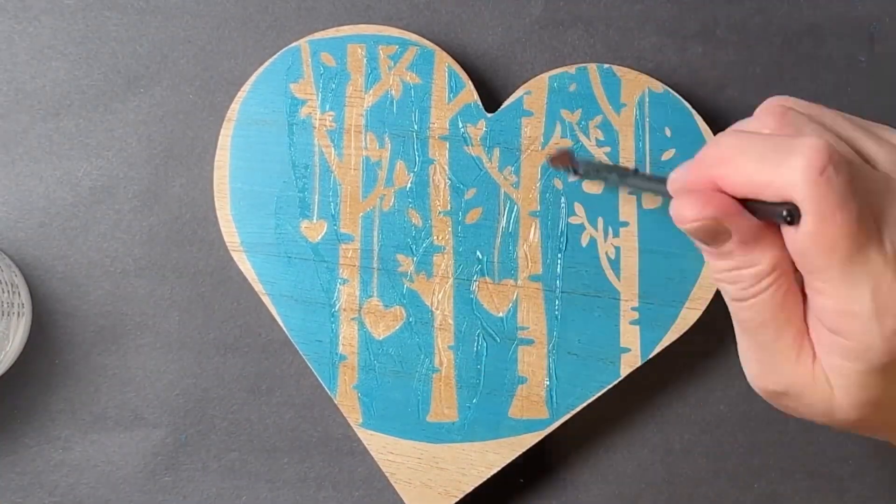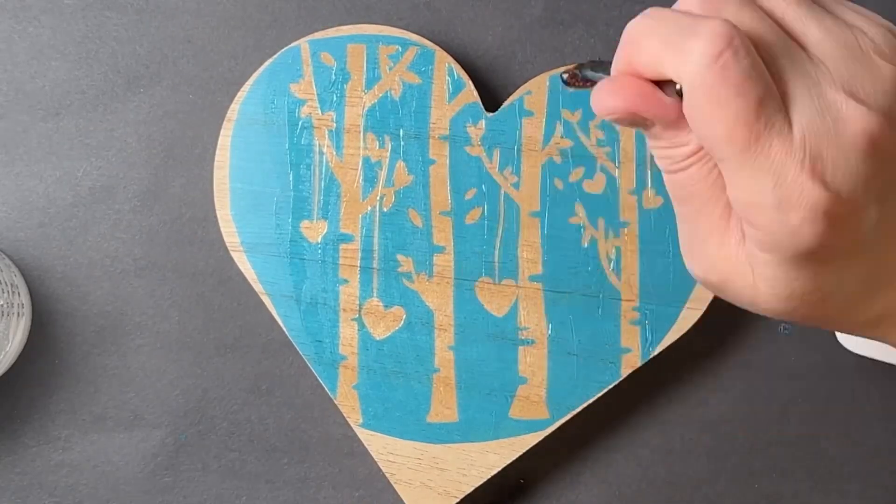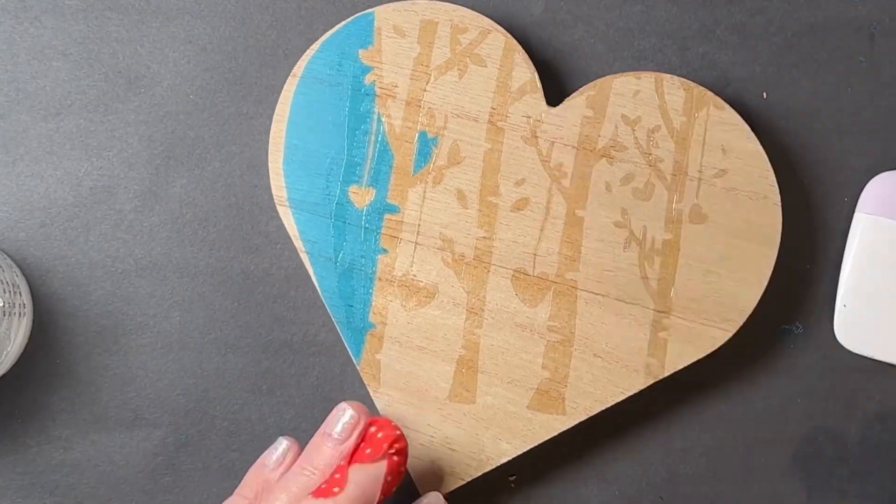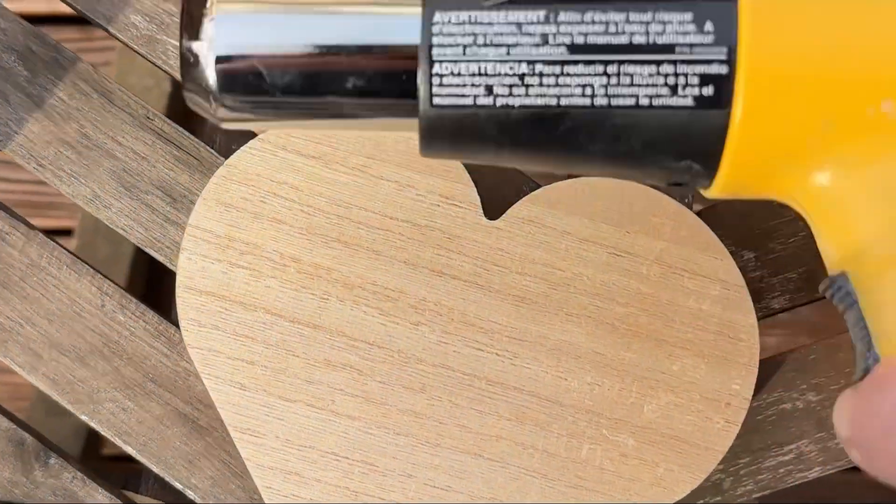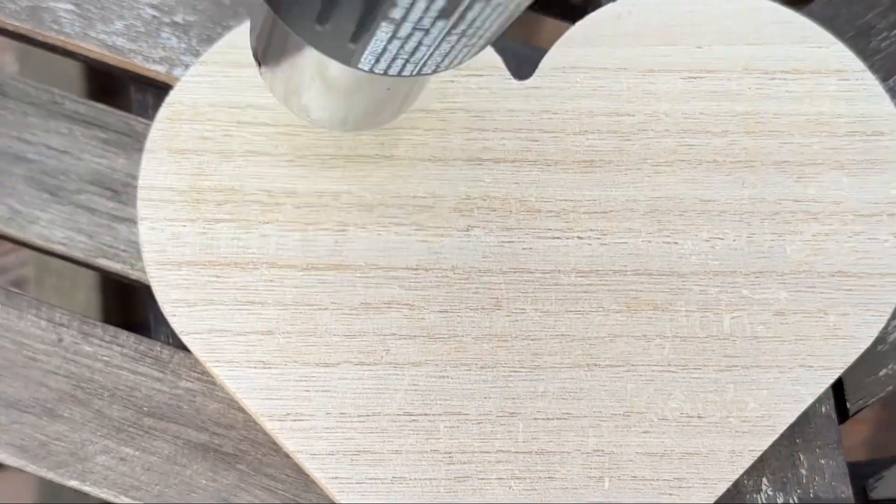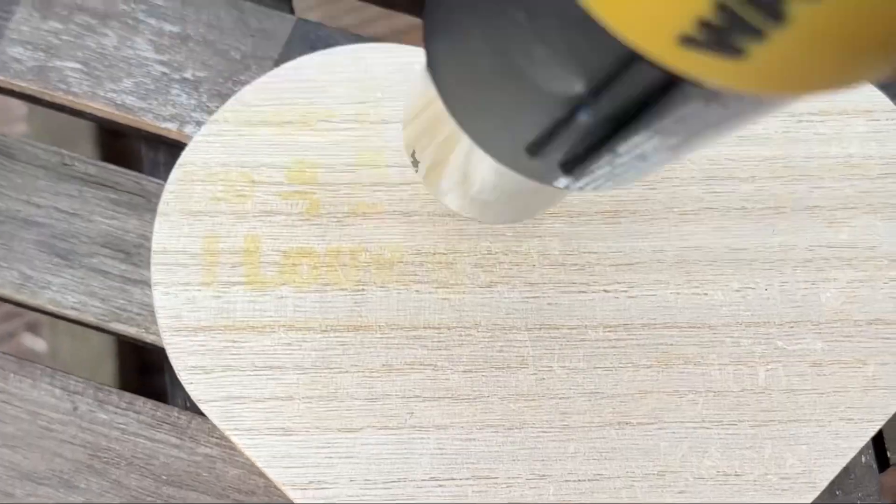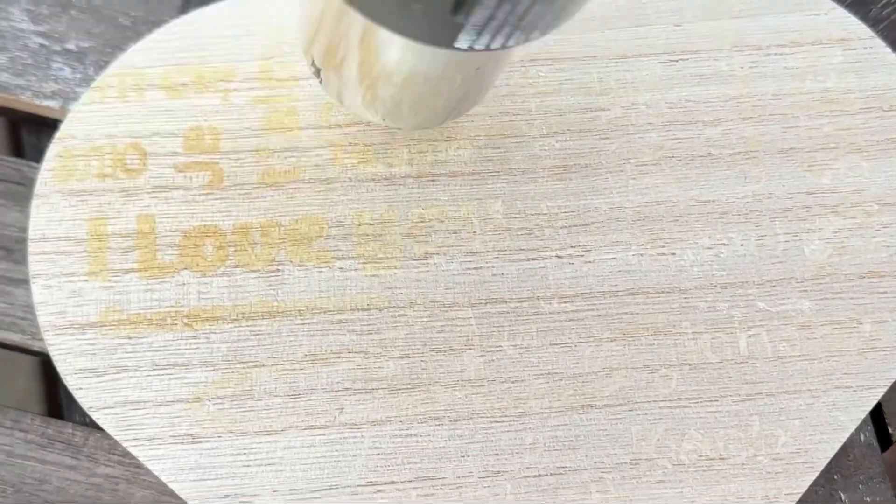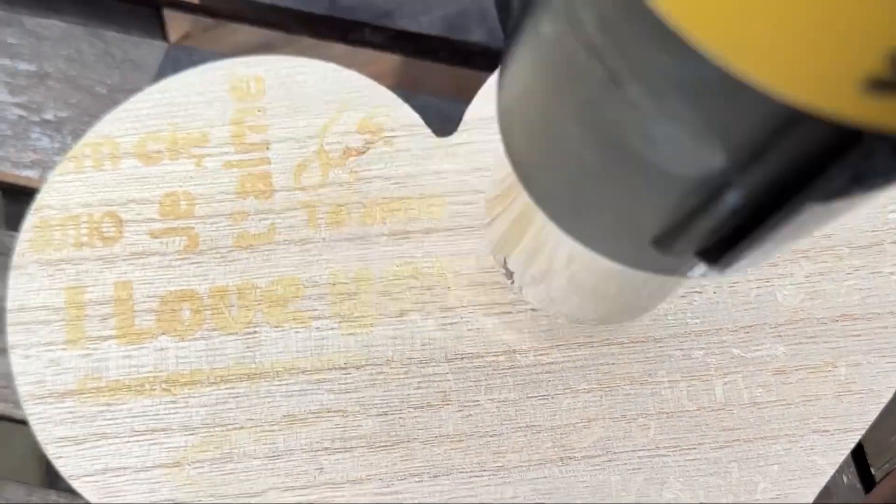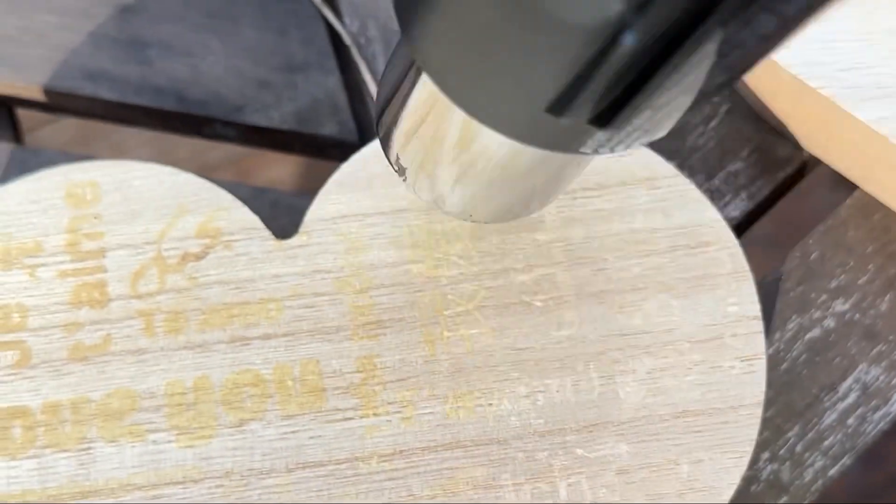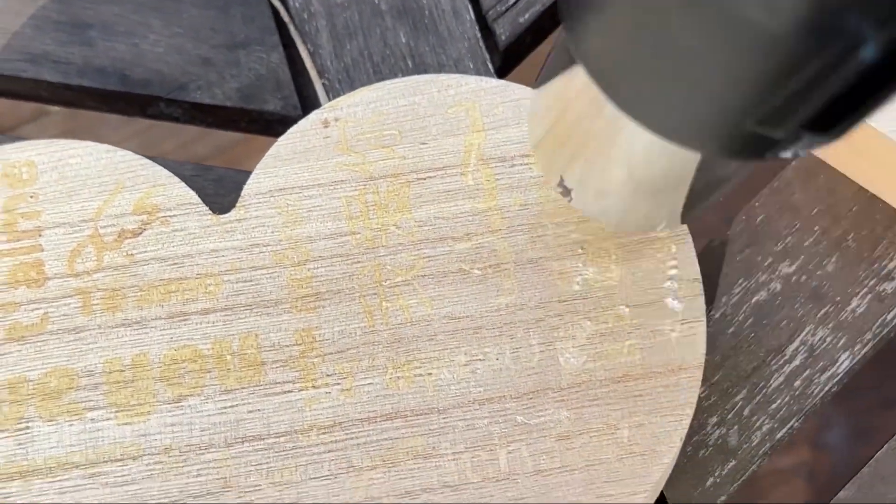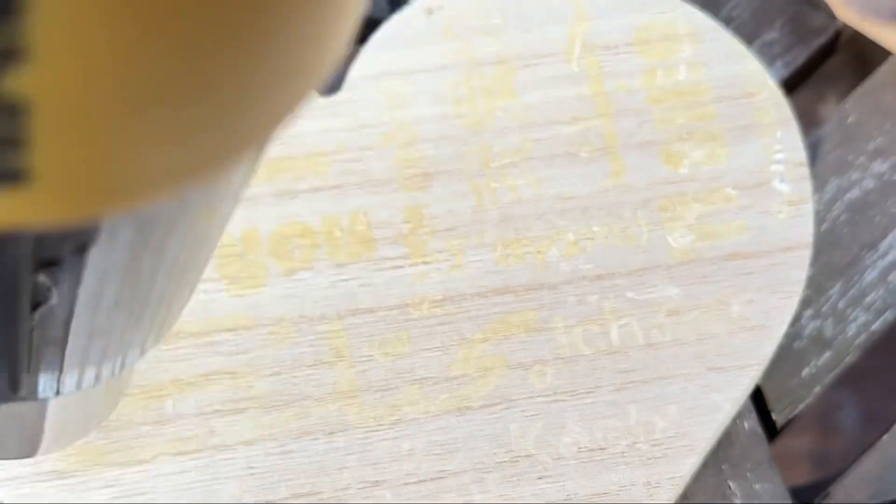So once I finished applying the ammonium chloride to the wood, I then went outside because this does smell pretty badly and I used a heat gun and I just went over all of the areas that I just put the ammonium chloride. I'm not sure if you need to let this dry for any period of time. By the time I had gotten outside most of them had dried pretty well.